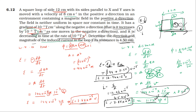The current in the loop and the field will produce the same direction. The induced current direction is determined to flow such that it opposes the change, and the current direction is in the anticlockwise direction in the loop.